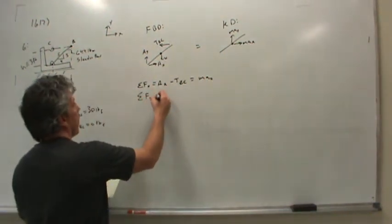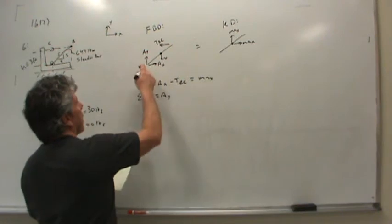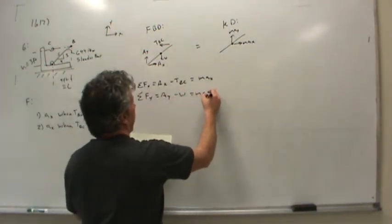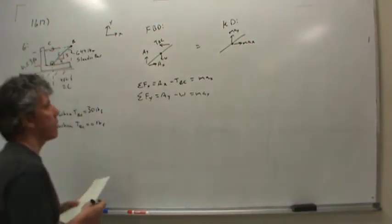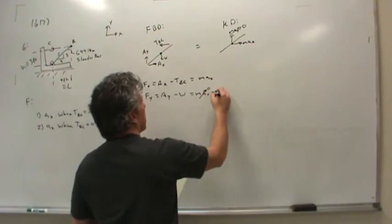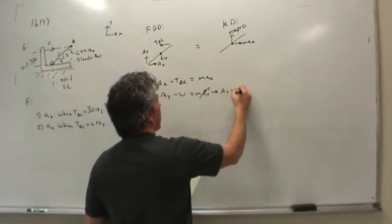Let's sum forces in the Y direction. That's AY minus the weight, and that's MAY. Now, I'm assuming that this does not accelerate in the Y direction. So this dynamic force, I know, will be 0. And so therefore, AY is equal to the weight.